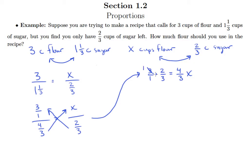3 divided by 3 is 1. 3 divided by 3 is 1. So this becomes 2/1 is equal to 4/3 X.